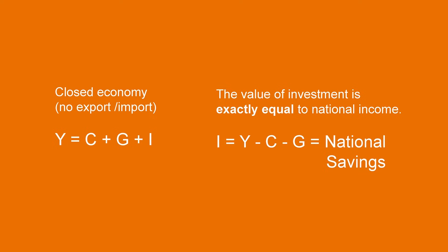That is because the income earned can either be consumed by households — that's C — by the government — that's G — or reinvested — that's I. As a consequence, investment, I, is equal to the difference between the national income, Y, and the consumption of households, C, and the government, G. This means that everything that is not consumed is investment. In this setting, everything not consumed is put into savings, and those savings are reinvested.